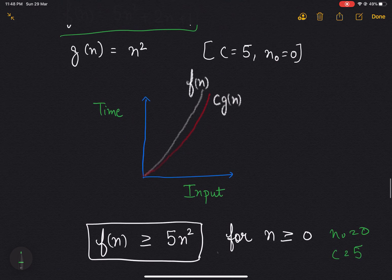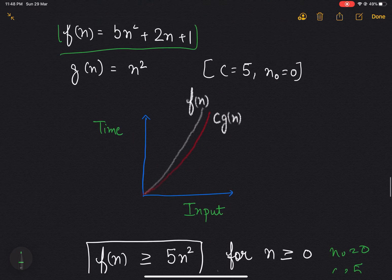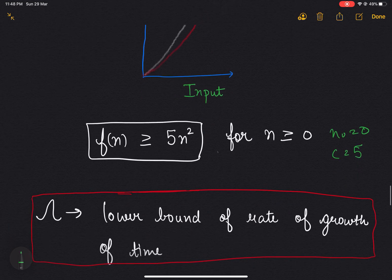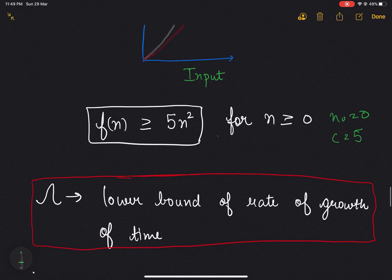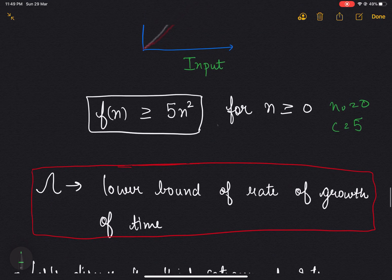As we can see in the graph, f(n) always exceeds c·g(n) after n₀. So Omega notation always represents the lower bound of the rate of growth of time.